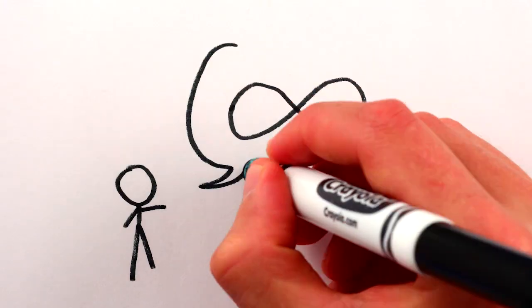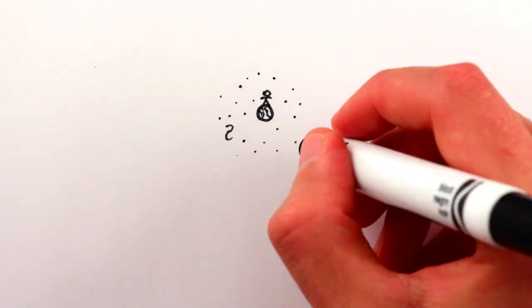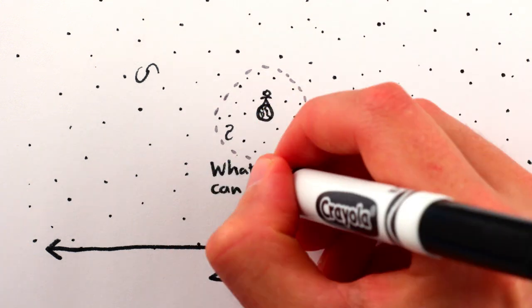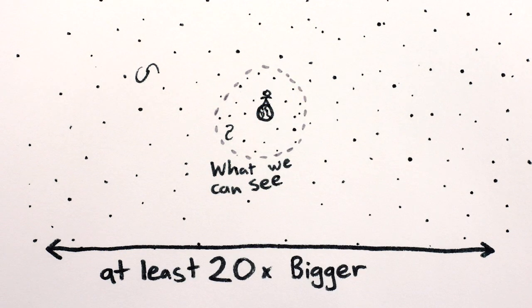The explanation for this is the magical power of infinity. The whole universe is really big. Current data show it's at least 20 times bigger than the observable universe, but that's just a lower bound. It might be infinite.